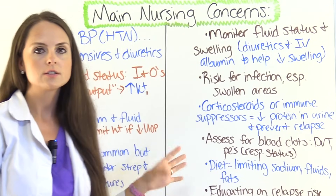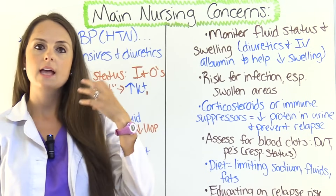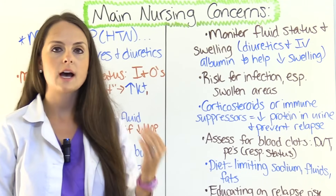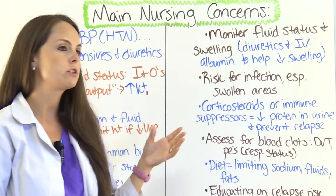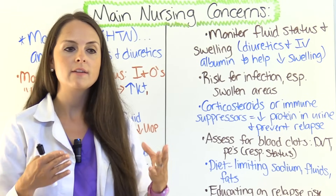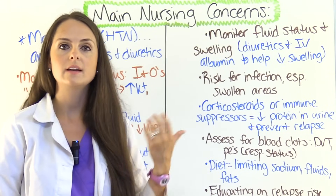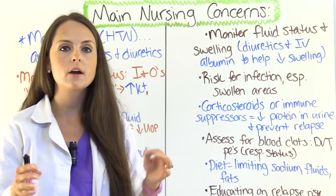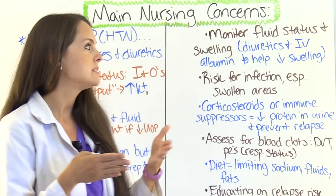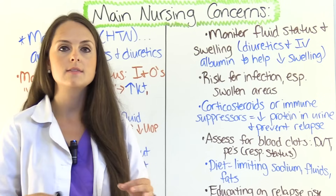For nursing concerns with nephrotic syndrome, we also monitor fluid status and swelling. The physician may order diuretics along with IV albumin to help decrease swelling. Putting albumin back into the blood will help start regulating oncotic pressure — water can come back into the capillary from the interstitial tissue, and the diuretic can then work on the kidneys to remove the excessive water.